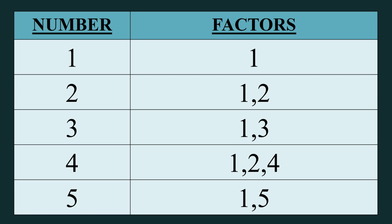As you know, 1 is neither prime nor composite. Prime number means the number which has only 2 factors, like 2, 3, 5, 7. These are the prime numbers. Why? Because they have only 2 factors: 1 and the number itself. And remaining numbers are composite numbers, which have more than 2 factors.